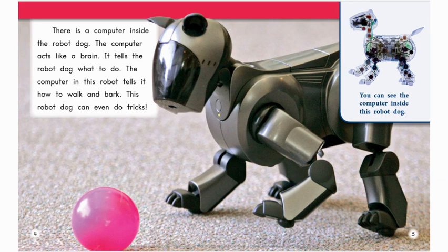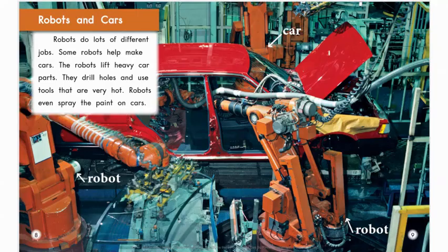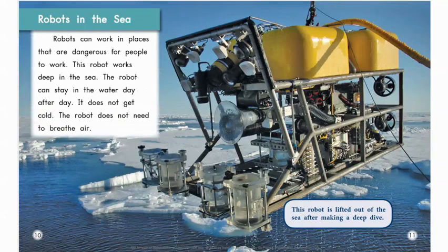Let's look on page six — the heading is 'Robot Jobs.' Now page eight — 'Robots and Cars.' These are all different headings. Now on page ten: 'Sometimes robots do dangerous work.' Let's clap that word — 'dangerous.' How many syllables do you hear? Dan-ger-ous — three syllables. Find that word 'dangerous,' put your finger on it, and say it.